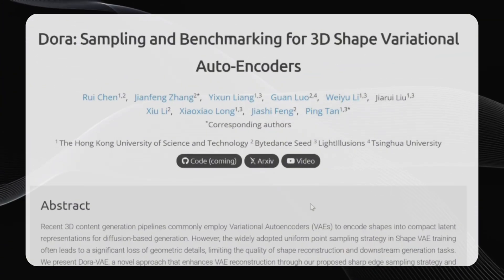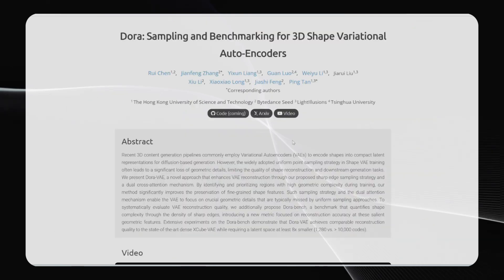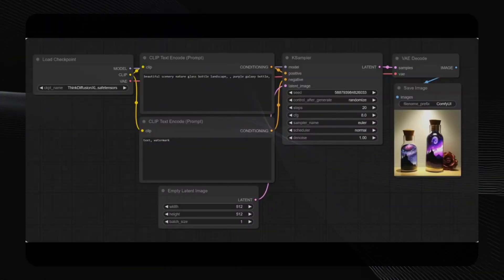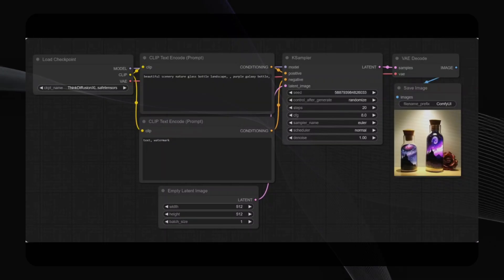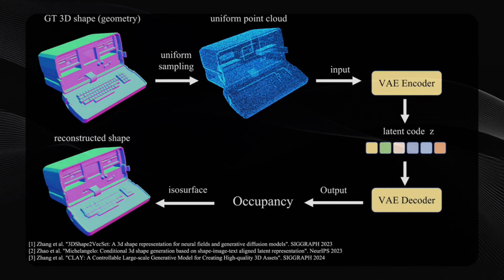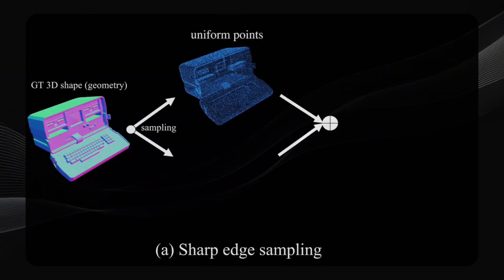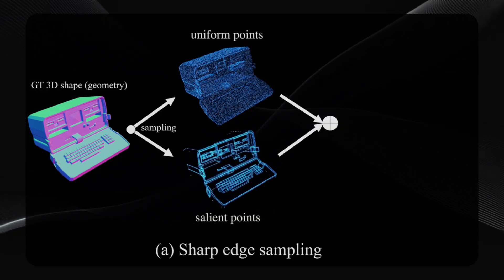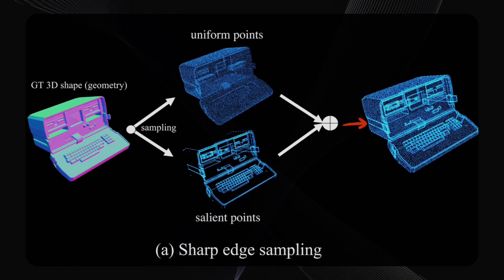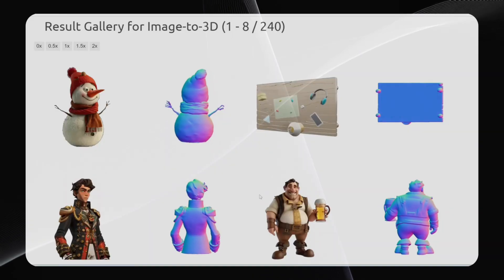Next up is Dora, another super interesting project. This is a really accurate AI that can generate 3D models from just one photo. Technically speaking, Dora is a Variational Autoencoder, or VAE. If you've played around with ComfyUI, Stable Diffusion, or Mid-Journey, you might have heard that term. A VAE is basically a way to compress and decompress data. In Dora's case, it's compressing complex 3D shapes into simple data and then back into 3D shapes again. Current VAEs for 3D modeling use Uniform Point Sampling, which can lead to a loss of detail, but Dora has a new approach called Sharp Edge Sampling, which identifies and focuses on the most important parts of the shape, like sharp edges and corners, helping the VAE preserve more details and create better-looking 3D models.